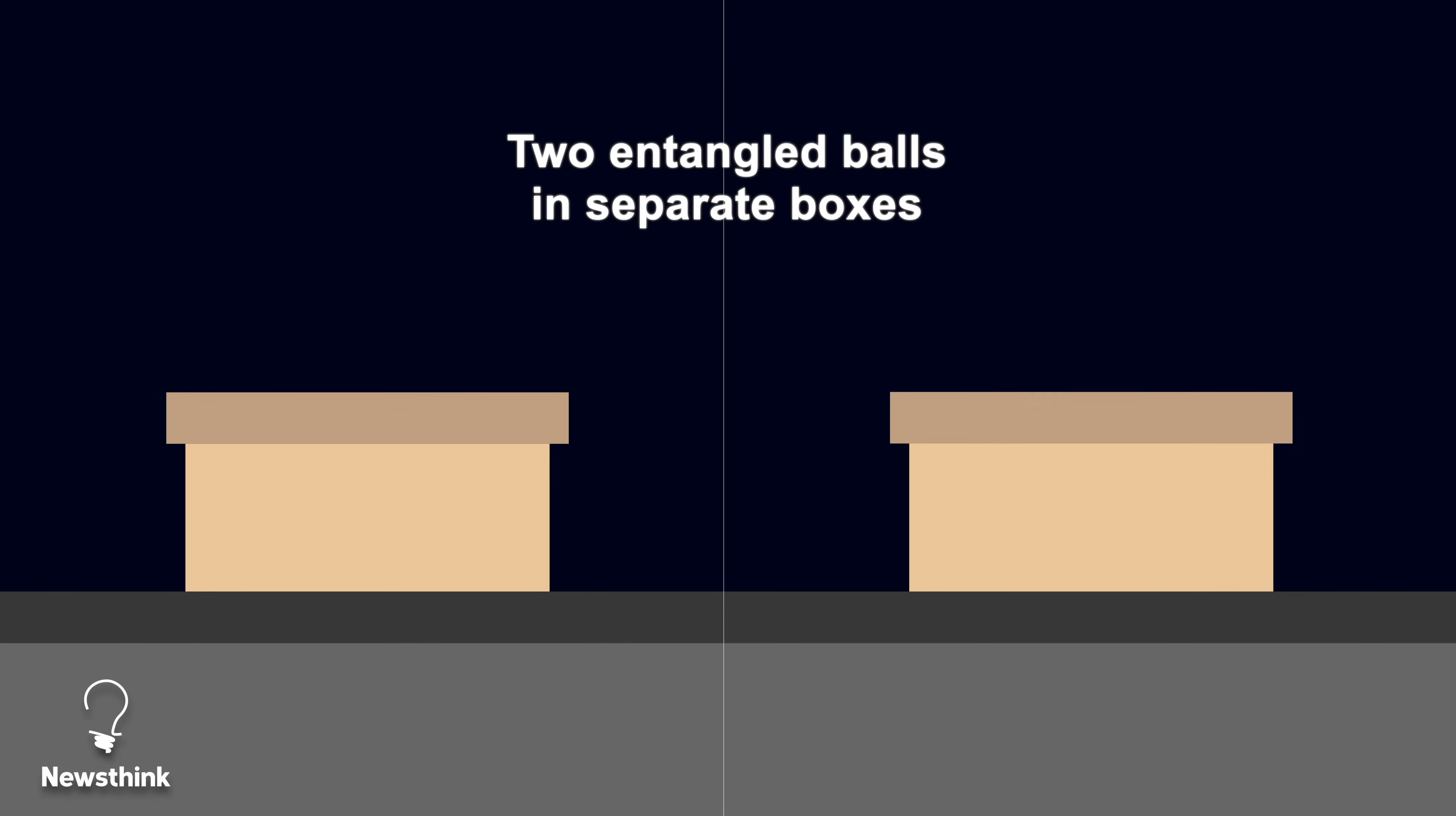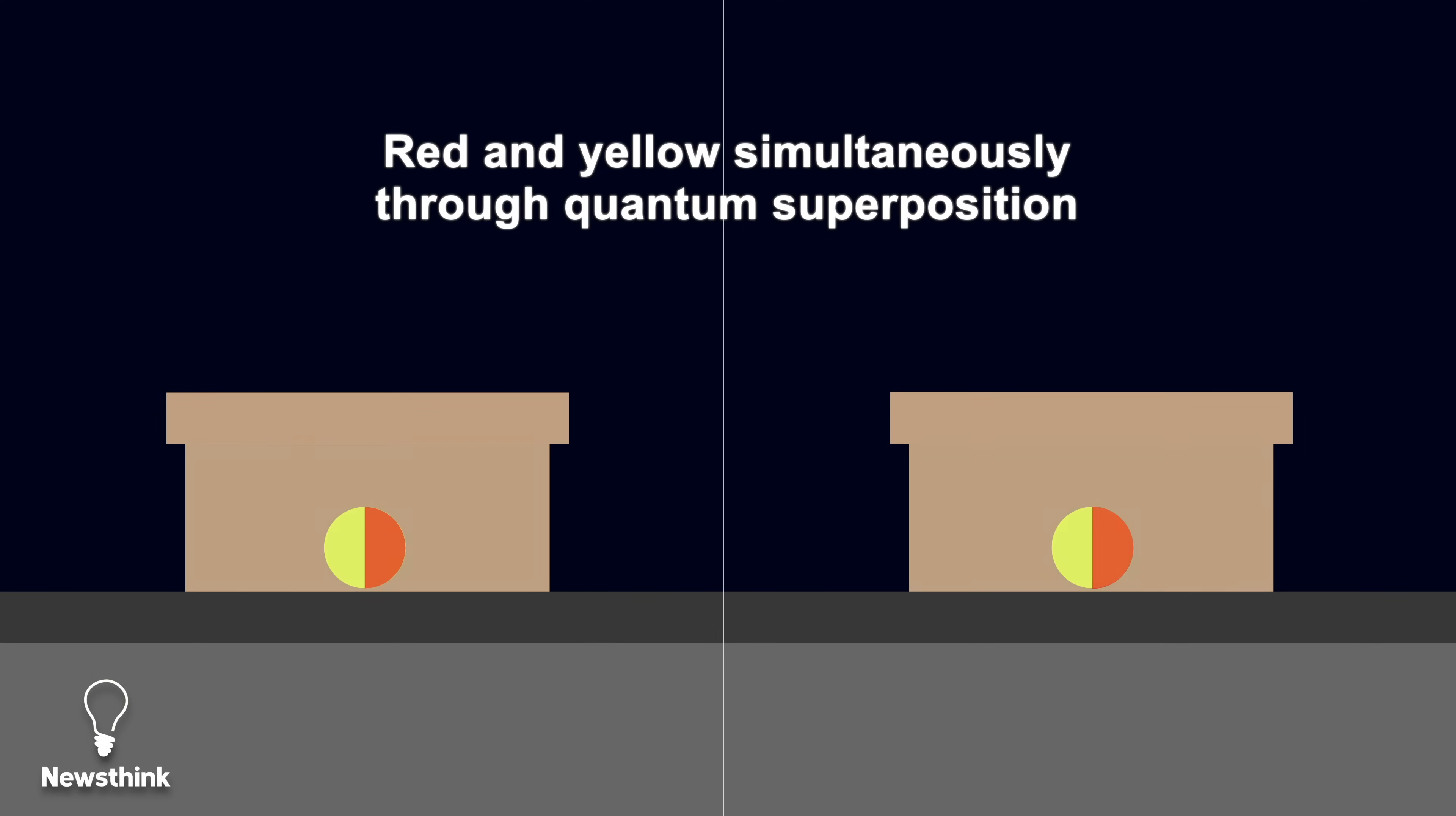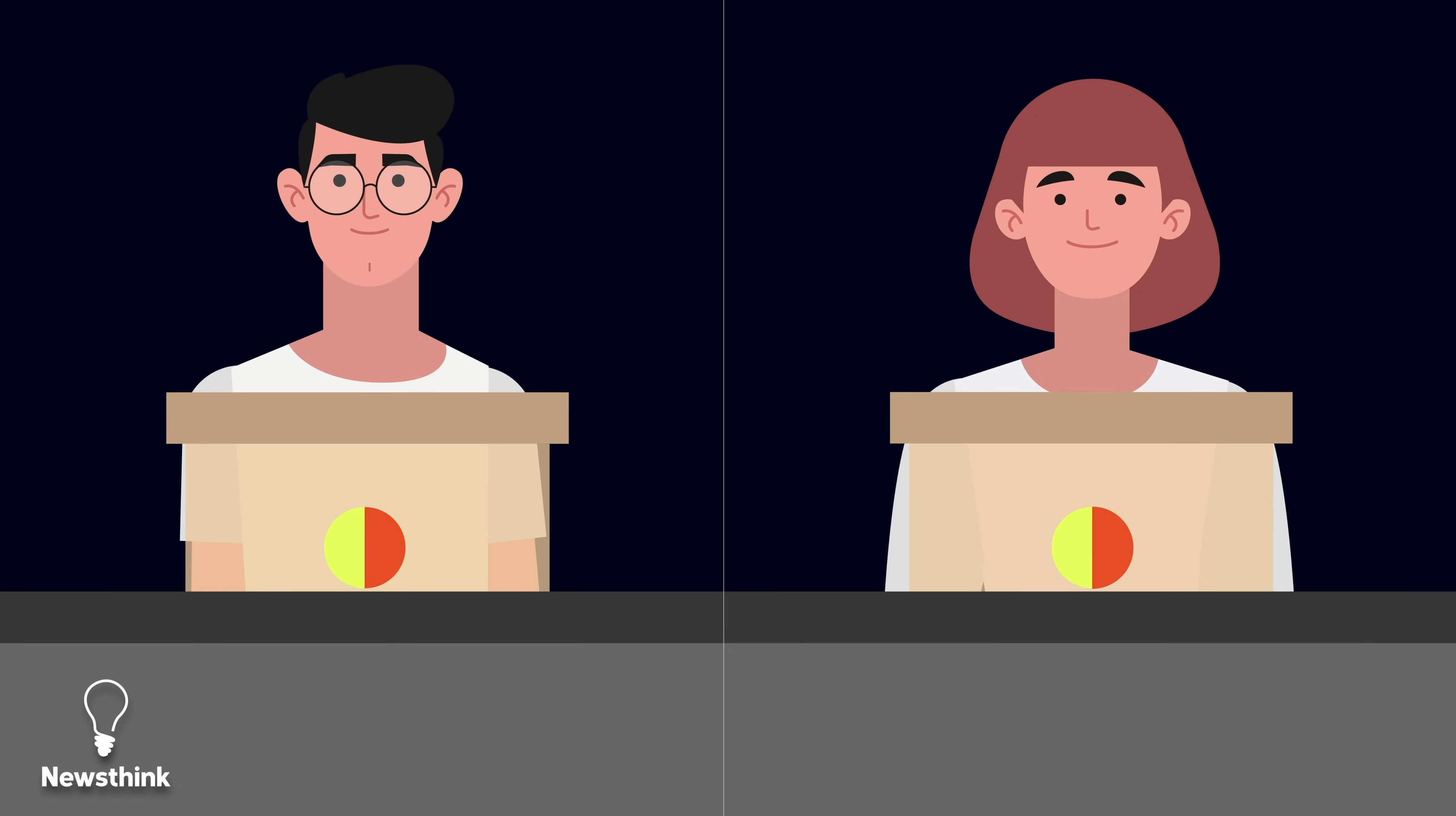Let's say you have two entangled balls in separate boxes. Before opening the boxes to check their colors, each ball can be both red and yellow simultaneously, thanks to superposition existing in multiple states at once. When Mark opens his box to find a yellow ball, Sarah's ball also turns yellow.